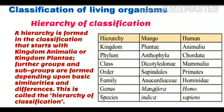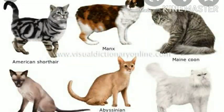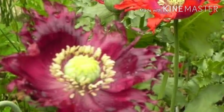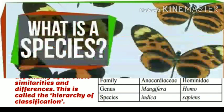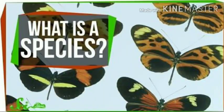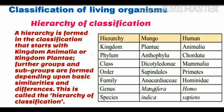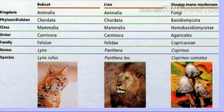Students, what do you mean by classification? As we know, there are millions of species of animals and plants living on this earth. Species means animals or plants of the same kind. So in order to study them, it became very necessary to group them. When you group them, that is called classification.